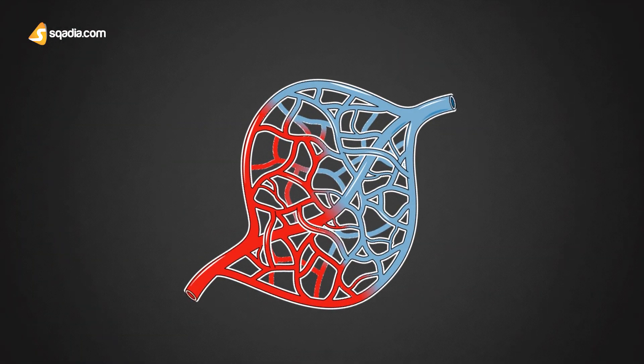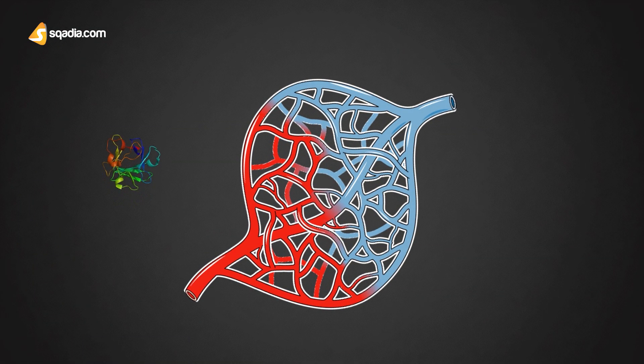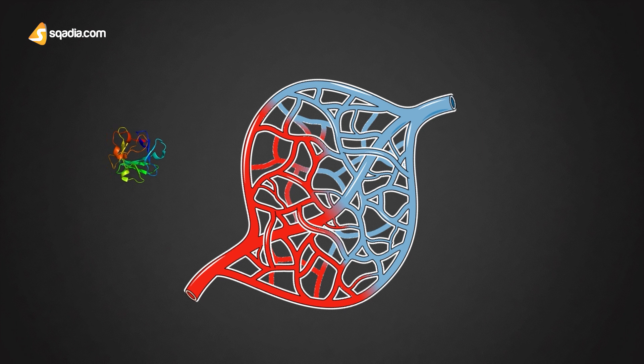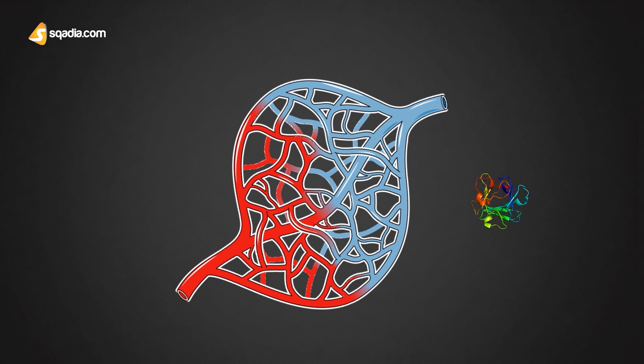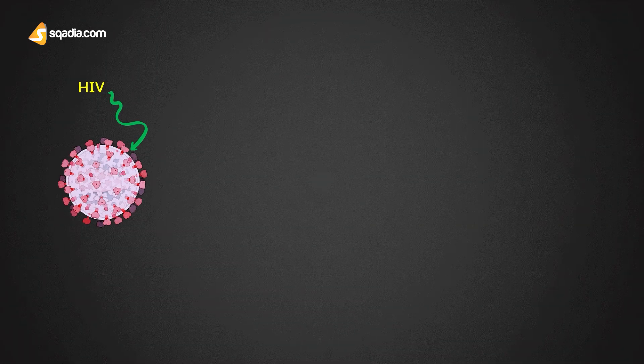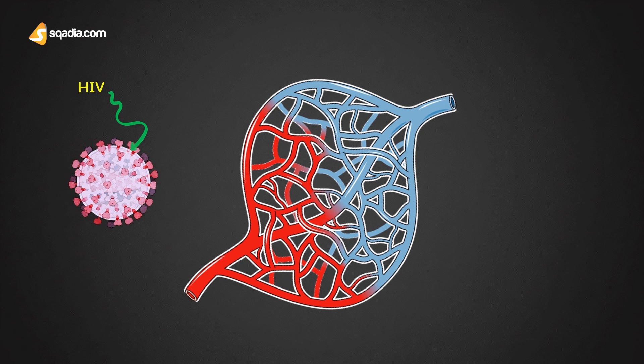The example of this type of transport is the movement of proteins from capillary blood into interstitial fluid across the endothelial cells of the capillary. Many pathogens like HIV are also transported by this mechanism.